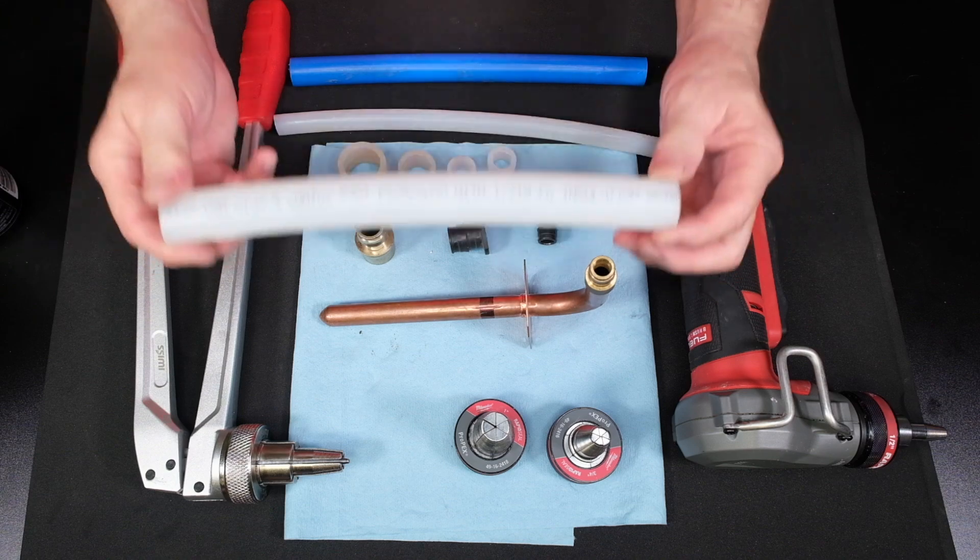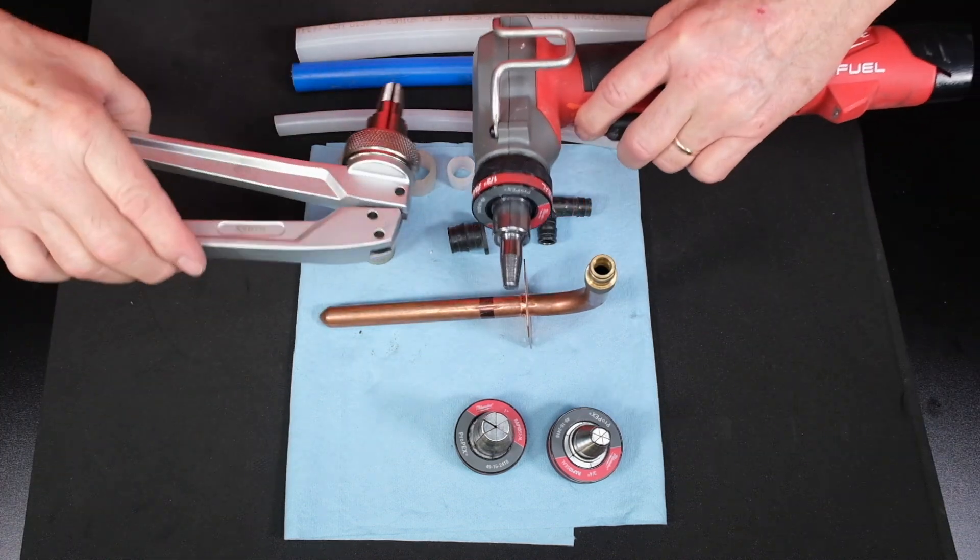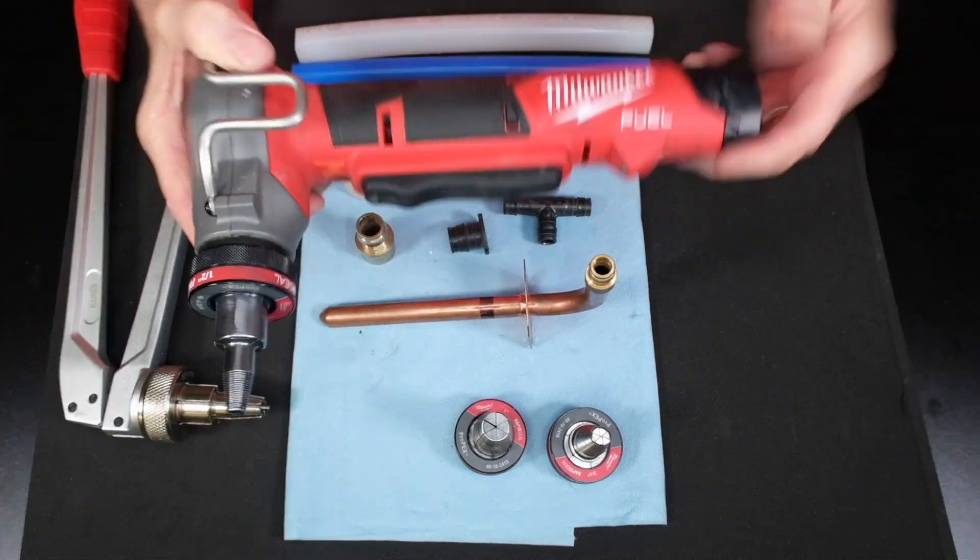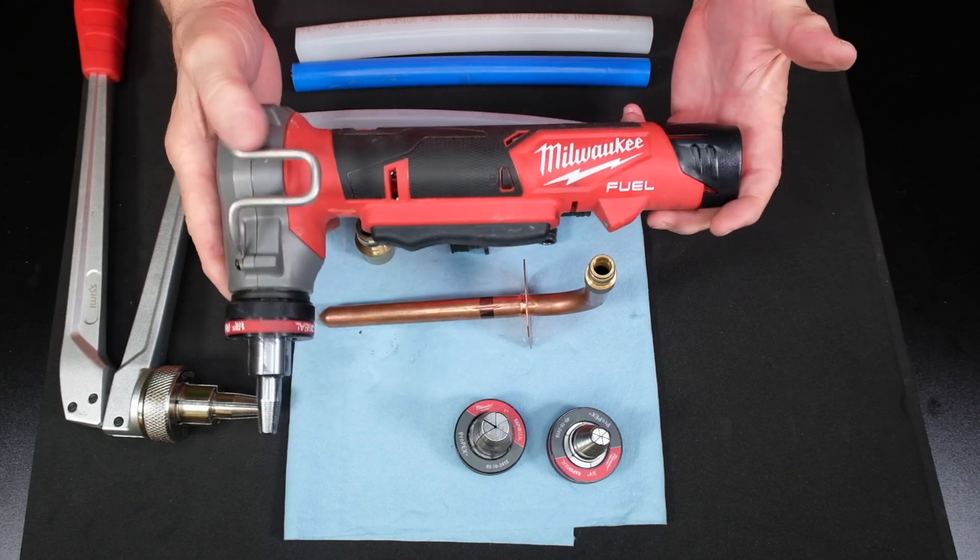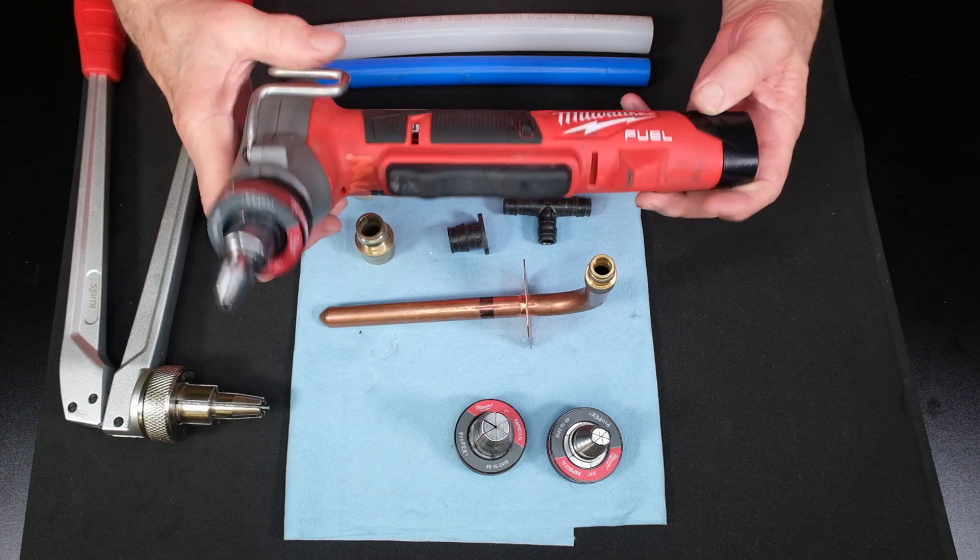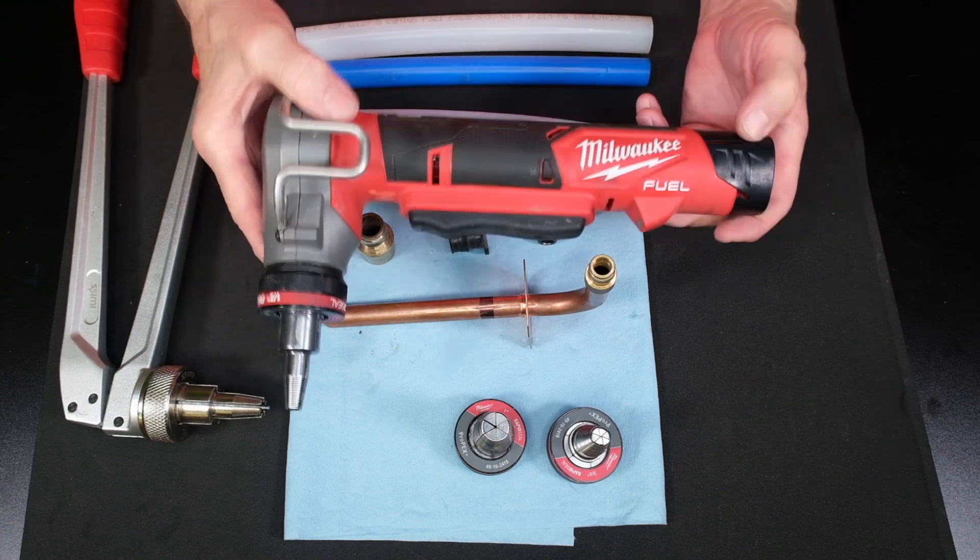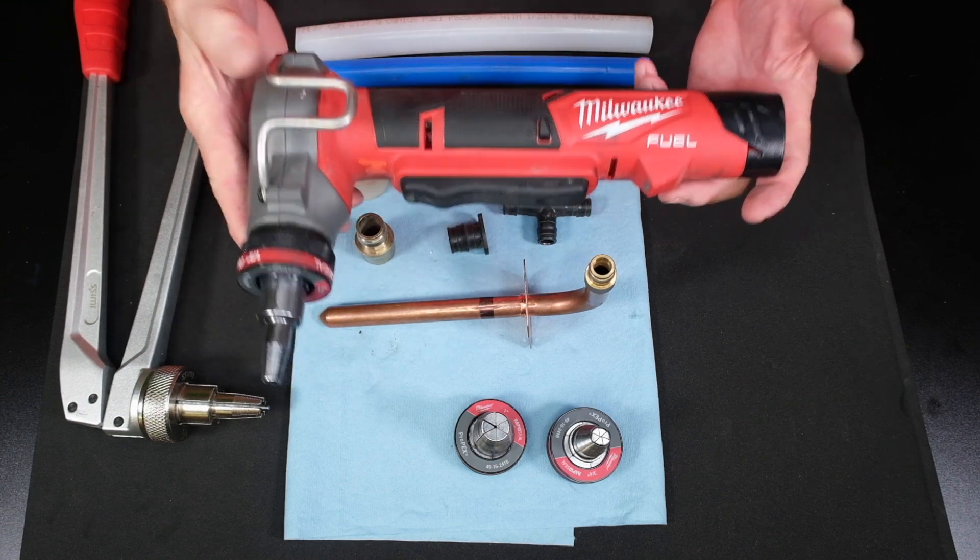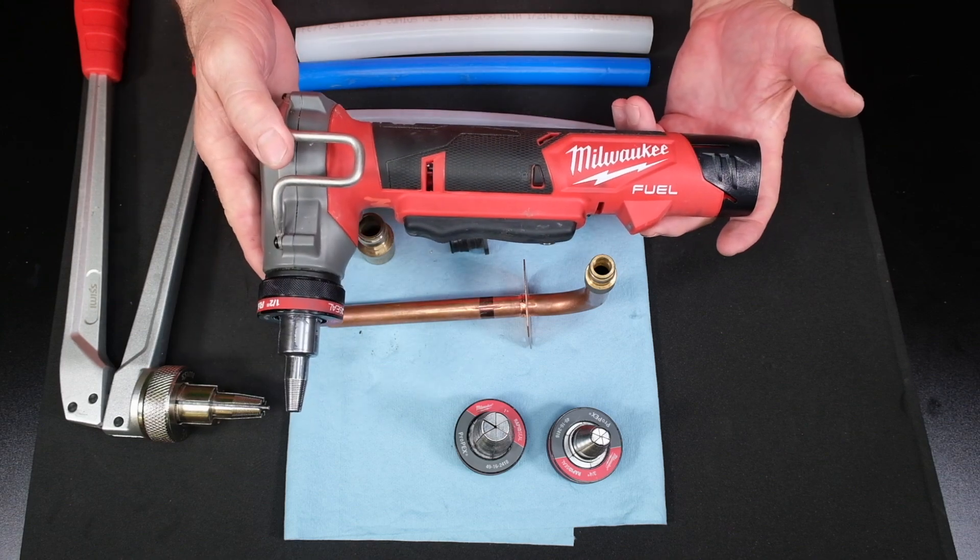Now, what this does is this expands. These are two types of expanding tools. Of course, who can beat the Milwaukee Expander? Rigid makes one also. It's a great tool. This is if you're doing a lot of Upanor daily. I would recommend having one of these. In fact, this is a very easy tool to use. It works great.